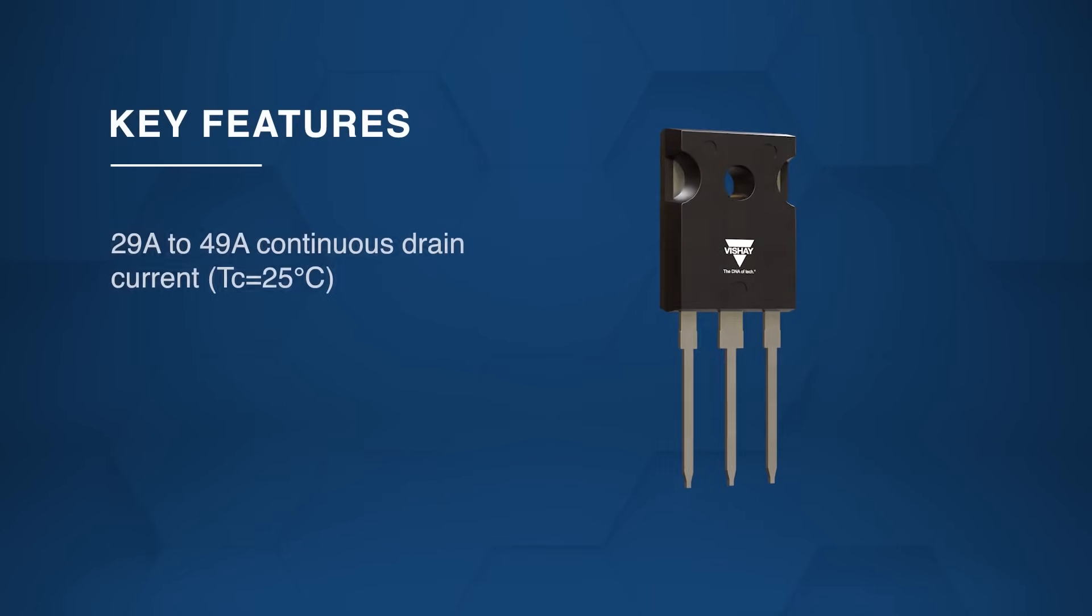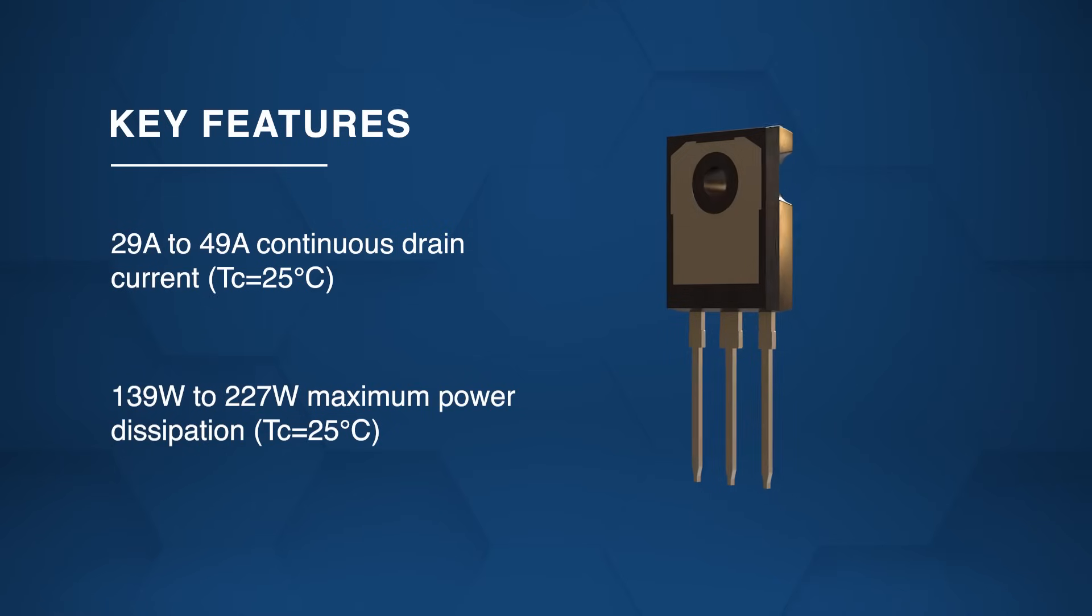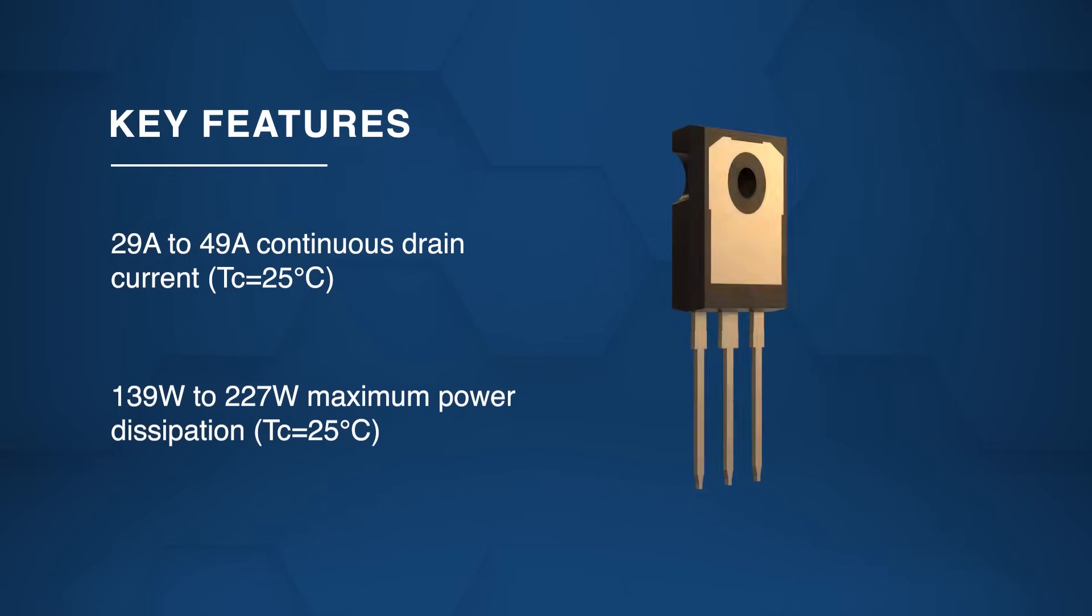The MOSFETs support a continuous drain current range of 29 amps to 49 amps and feature a maximum power dissipation range of 139 watts to 227 watts at TC equals 25 degrees Celsius.